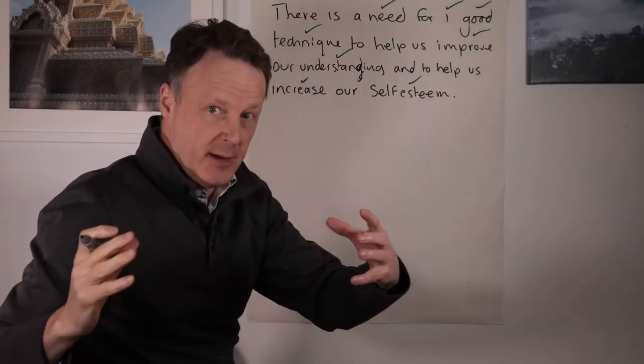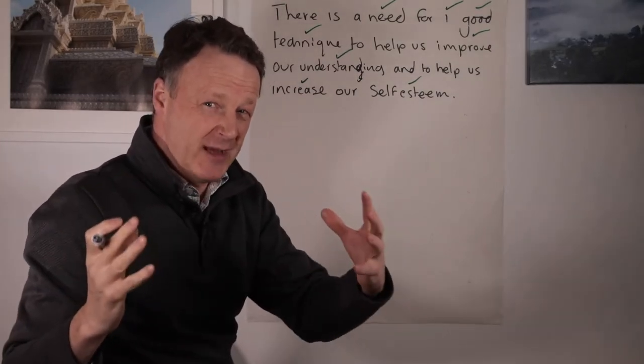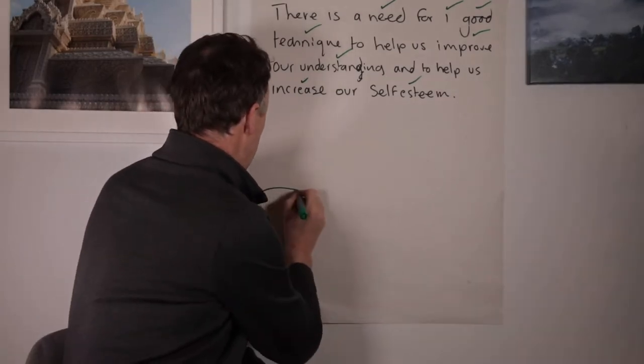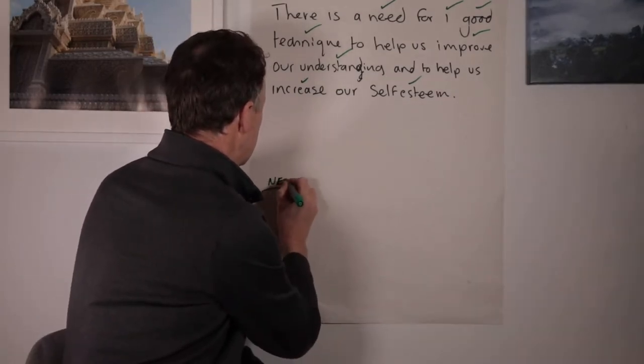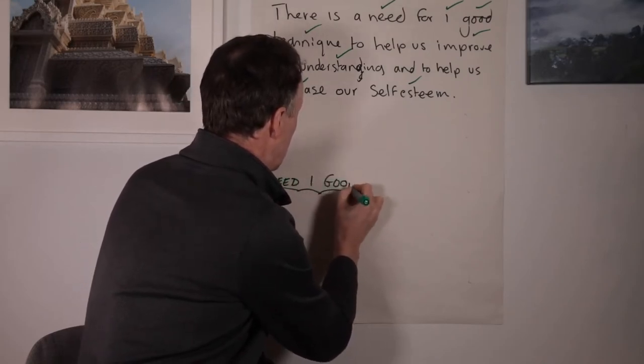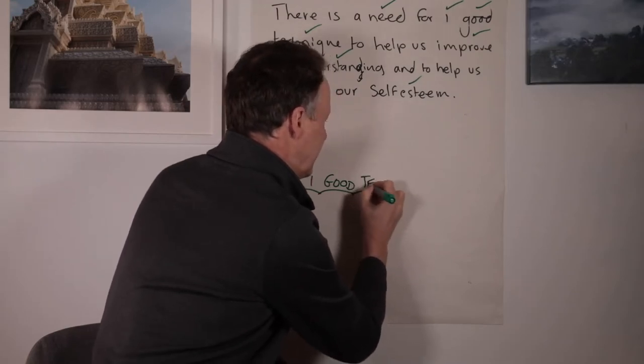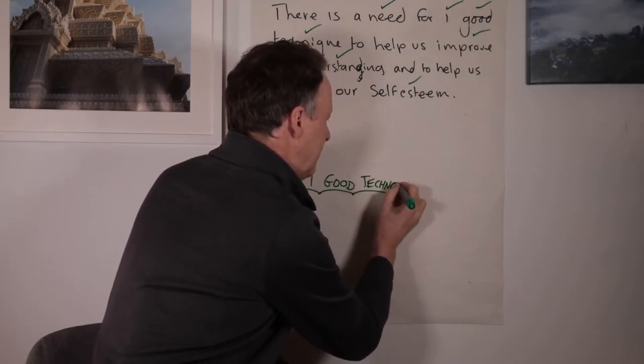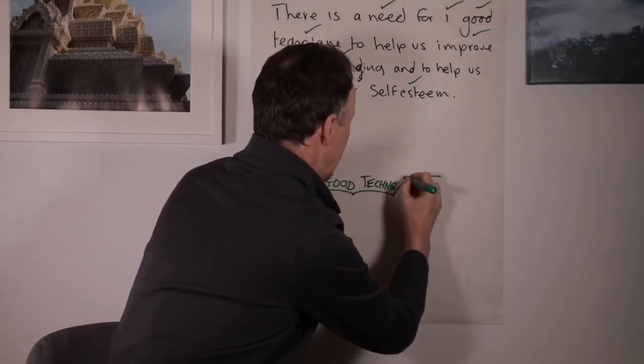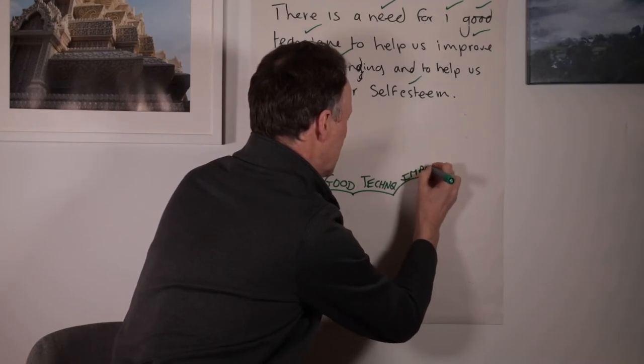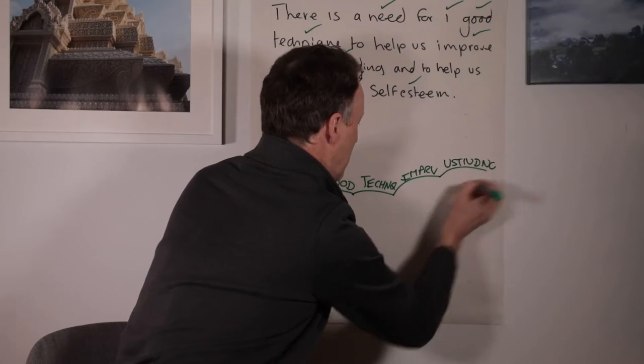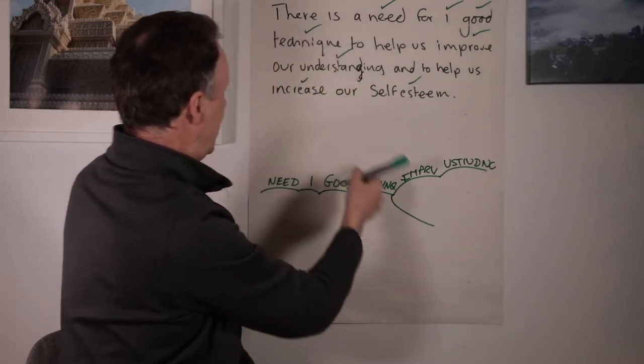So the next part of the secret is what I call deep processing. So breaking it all in single units and reconnecting it. So here I'd go, need one good technique. And I abbreviate it. It just helps to speed things up, but I can remember it later on easily. Improve understanding. And increase self-esteem.